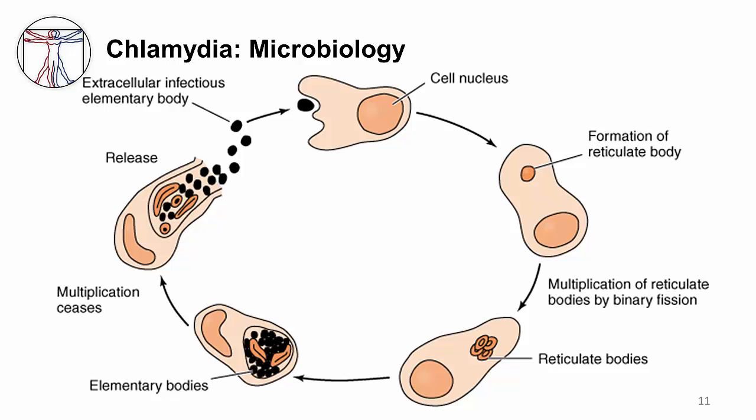Chlamydia has an interesting life cycle. An extracellular inert elementary body enters an epithelial cell, which changes into a reticulate body. This is divided by binary fission. Reticulate bodies then change into elementary bodies, which are hardy and released into the environment, ready to infect other epithelial cells. Large cytoplasmic inclusions can develop and can be visualized.